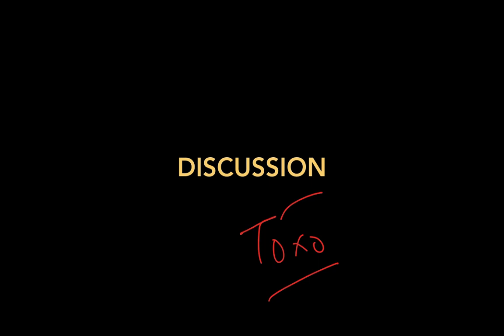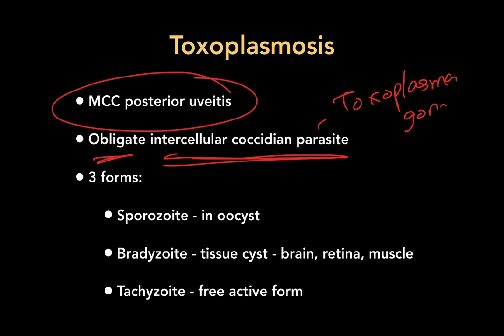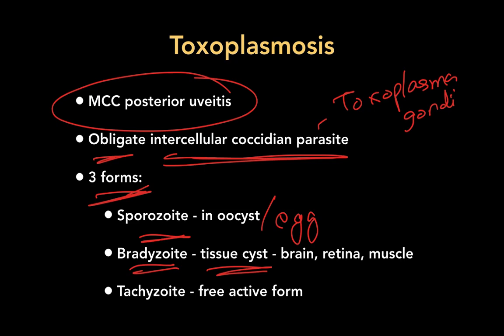Toxoplasmosis is the most common cause of posterior uveitis in the world, indicating its high prevalence. It is caused by Toxoplasma gondii, an obligate intracellular coccidian parasite. There are three forms: sporozoites found in oocysts or eggs; bradyzoites located in tissue cysts in the brain, retina, and muscle; and tachyzoites, which are the free, active form. Outside the body the form is the oocyst; inside the body you have bradyzoites and tachyzoites.